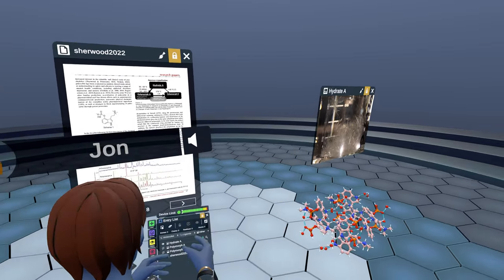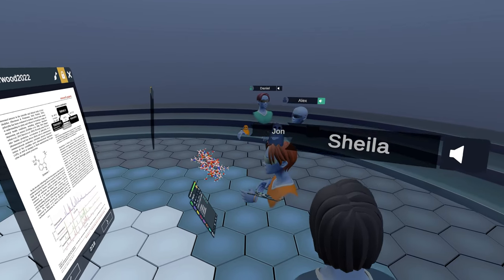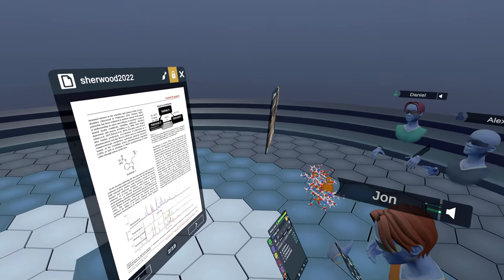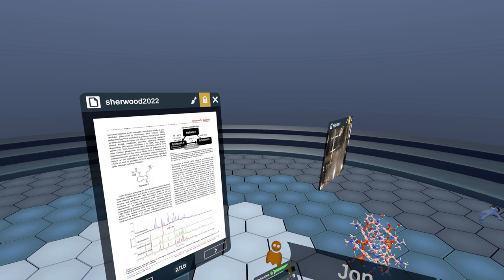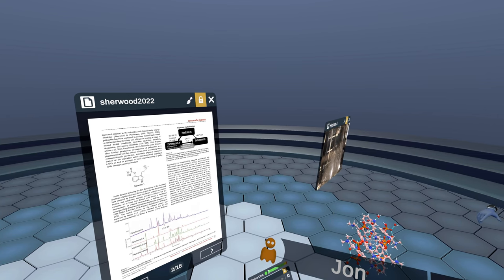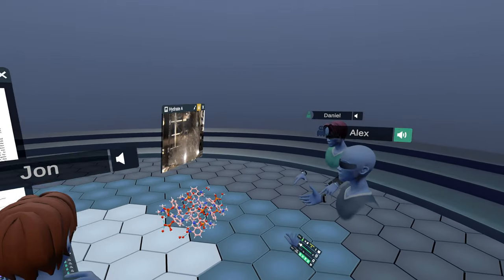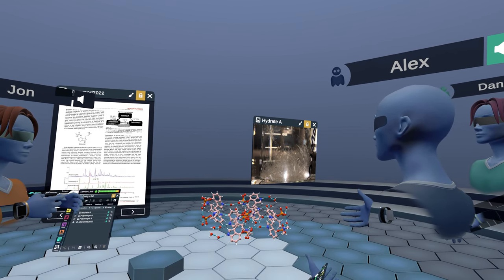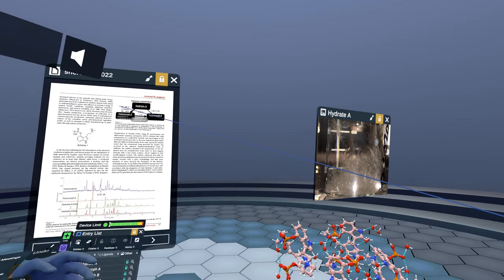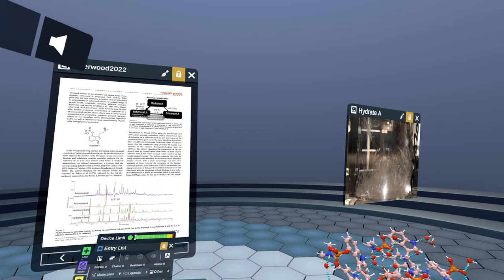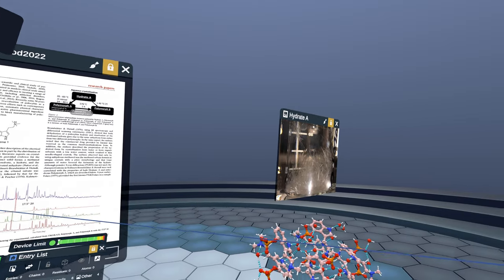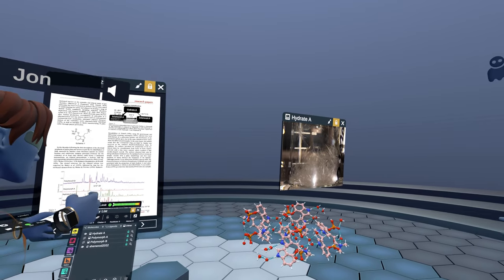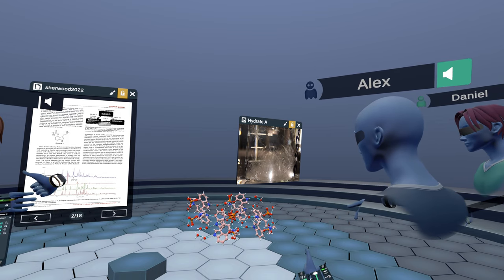So when you're manufacturing psilocybin, the last step of the synthesis is typically a recrystallization from water. So an aqueous crystallization, which forms this hydrate A. However, it's standard practice when you do a recrystallization to take your wet cake, your wet crystals, and dry them in a vacuum oven. And so what we found with drying the hydrate A at 30 to 50 degrees in vacuum for about a day, we'd get a new powder pattern and we called this polymorph A.